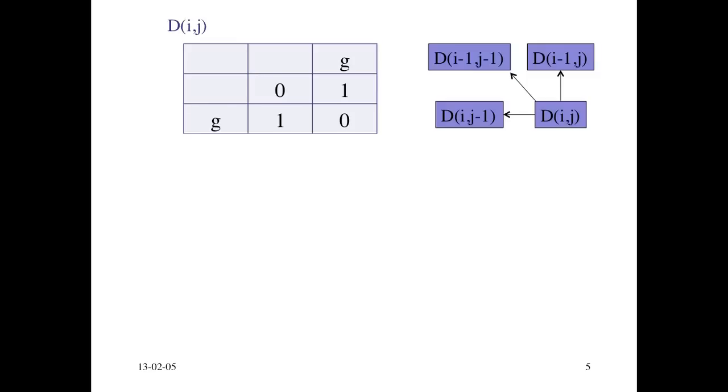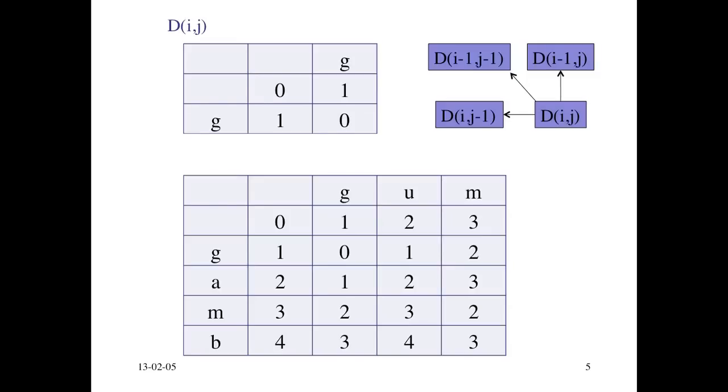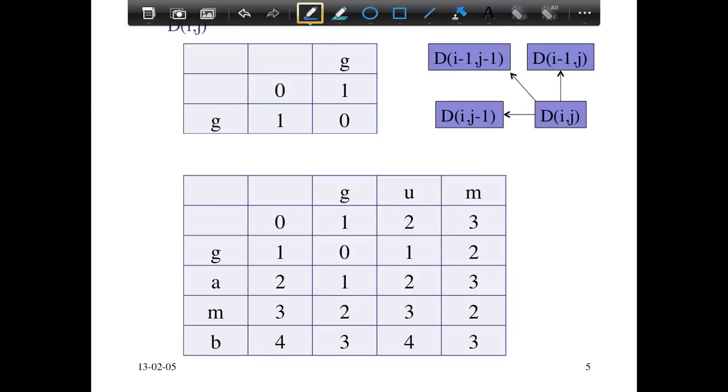So that's just a very simple source target pair. Here's a slightly larger prefix. In this case you have G-U-M in the target and GAMP in the target. So you have this from before. Now let's consider this cell here.